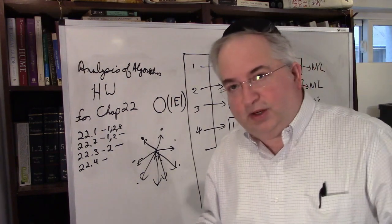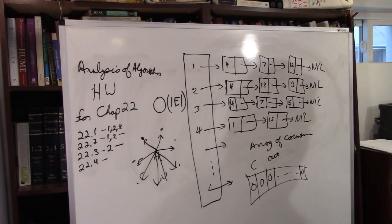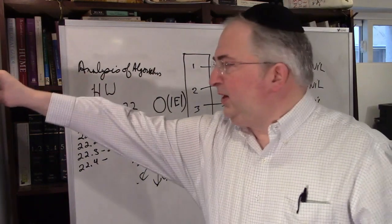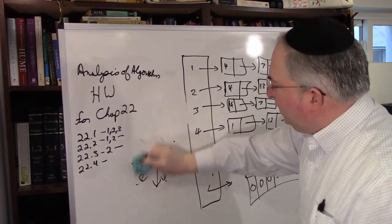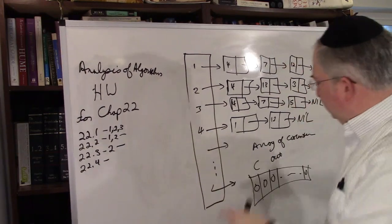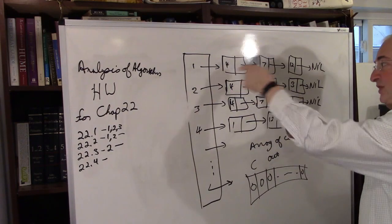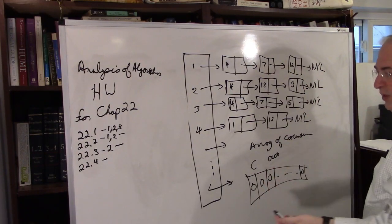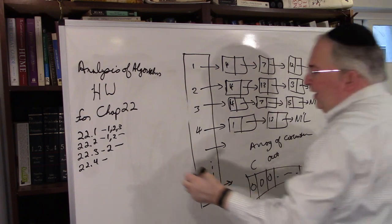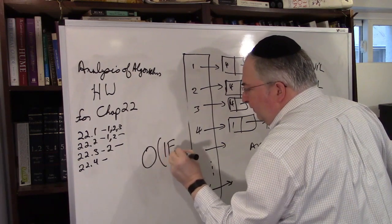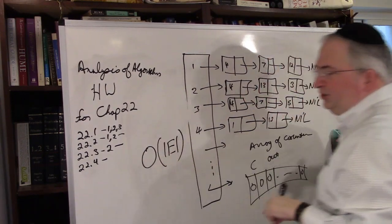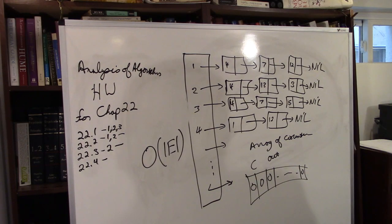How about in-degree? It's a little bit more complicated. You also have to set up an array of counters. But every single link corresponds to an edge, so this algorithm that calculates everything is O(E) — how many edges you have, that's how many operations. How about out-degree? It's the same thing, also O(E). You have to go through everything.